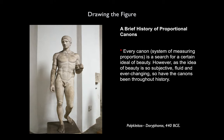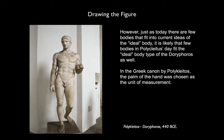For example, the celebrated Greek canon created by Polykleitos defined a strong male athlete who excelled at gymnastics and in the handling of weapons. A typical example of this canon is Doryphorus, which is one of the best-known sculptures of the classical era. However, just as today there are few bodies that fit into current ideas of the ideal body, it is likely that few bodies in Polykleitos' day fit into the ideal body of Doryphorus as well.